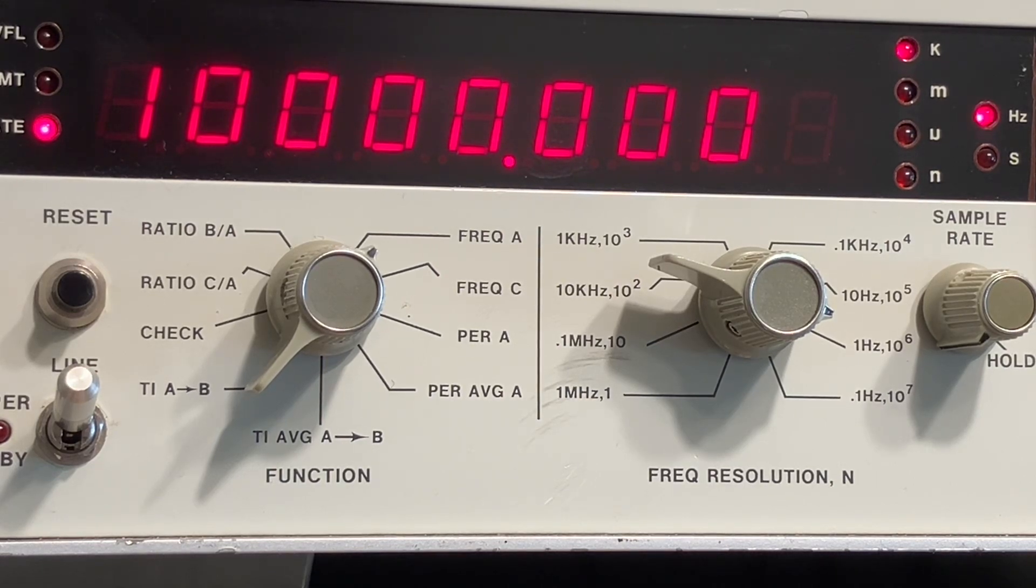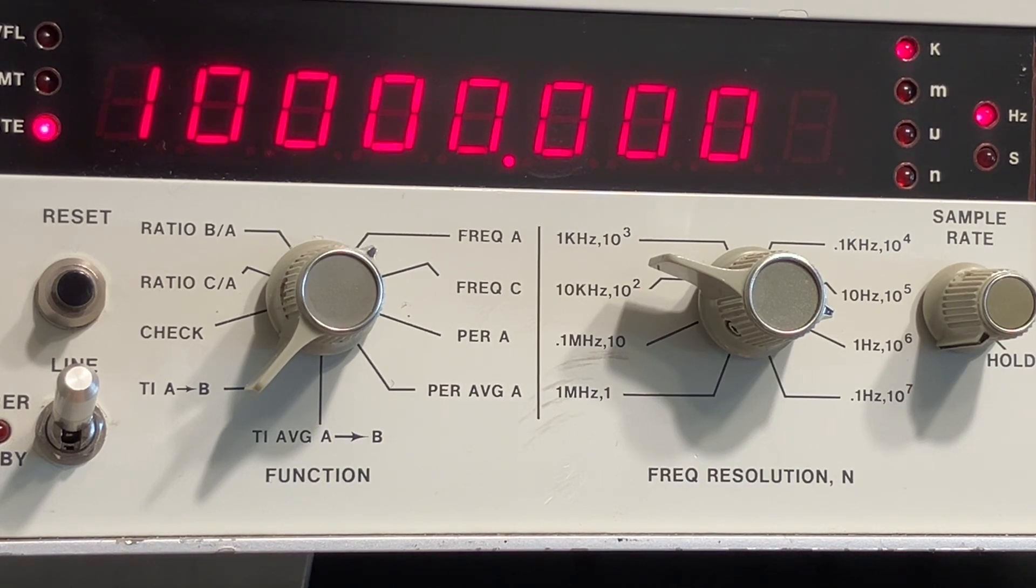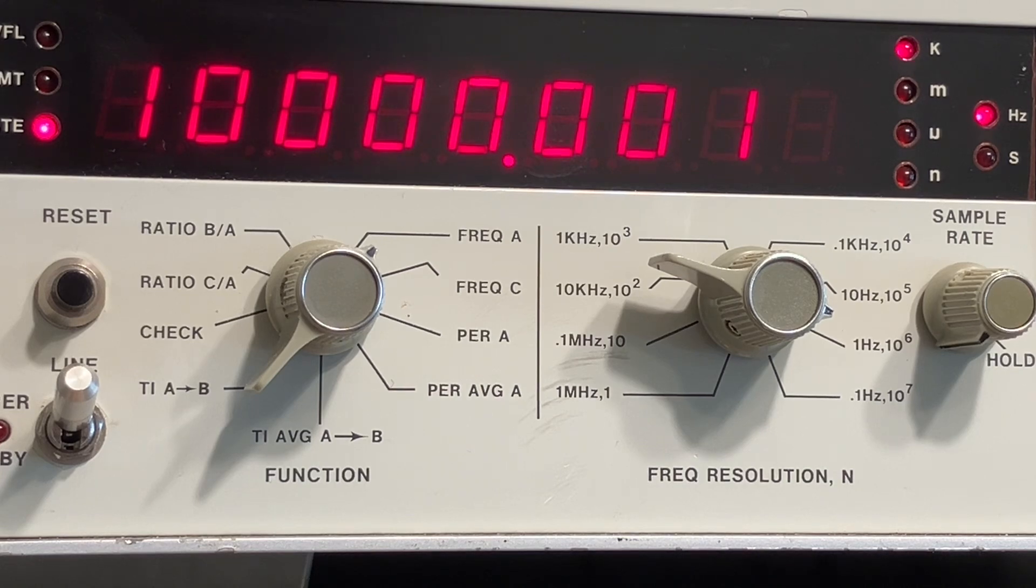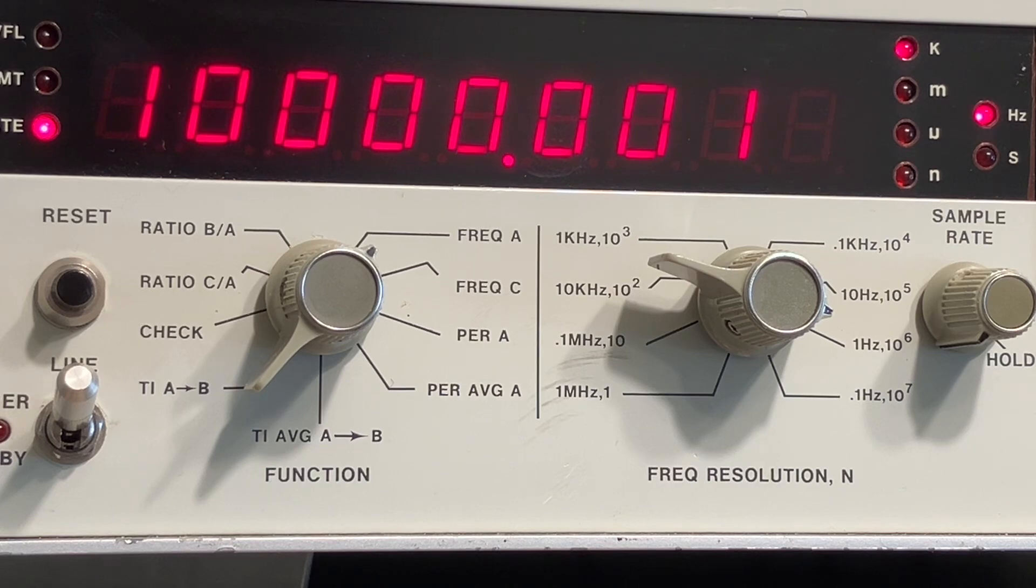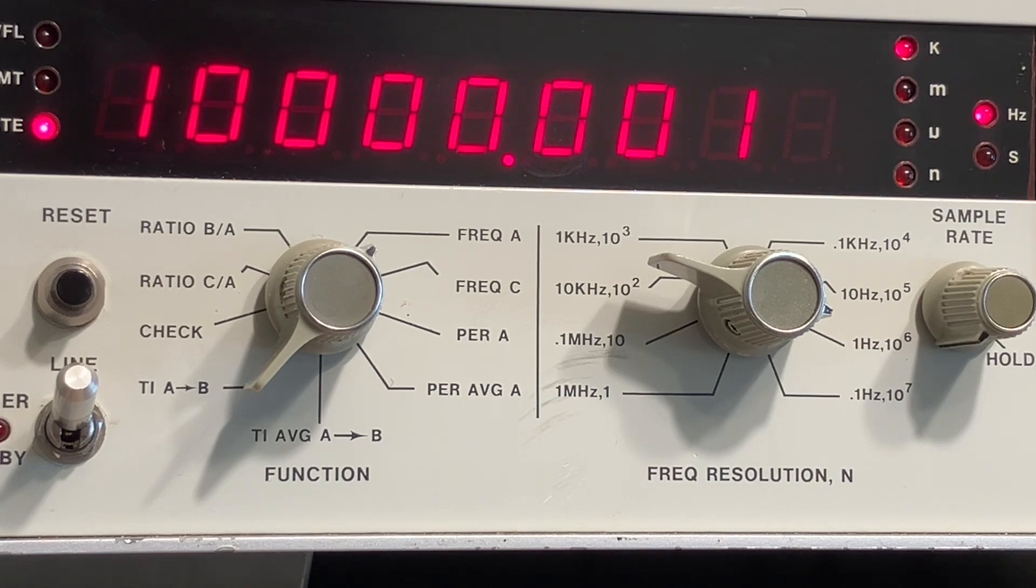As you can see, it's reading 10 megahertz, almost exactly. We get an occasional one on the least significant digit over here. So I think the instrument is working. All right. I would like to hook it up to my scope and see what the output looks like. And also take a look at the one pulse per second output and see what that looks like. So let's do that now.